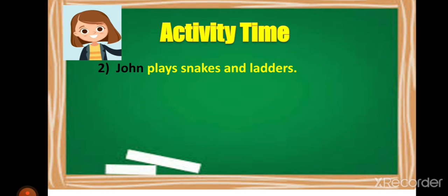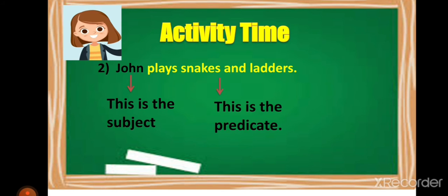Let us take one more example: John plays snakes and ladders. The verb is 'plays.' Who plays? John. So John is the subject and the remaining part is the predicate.